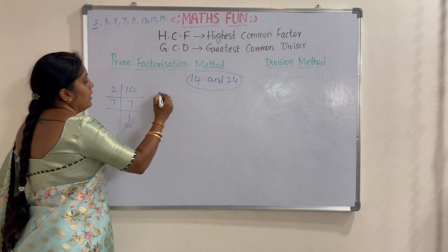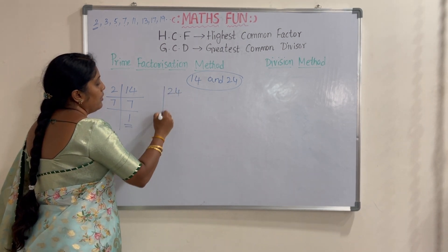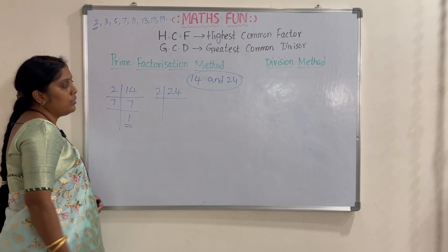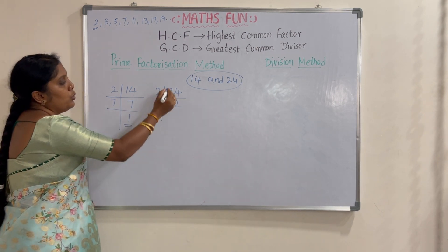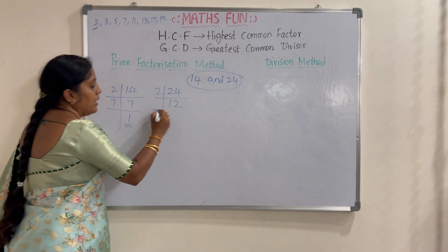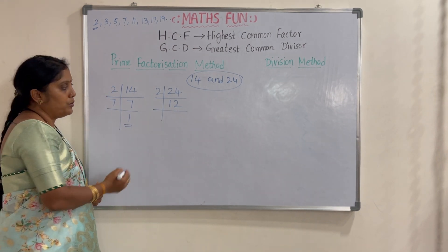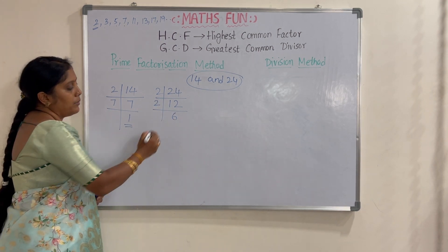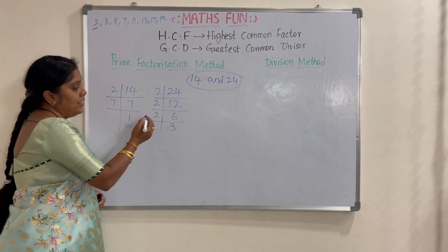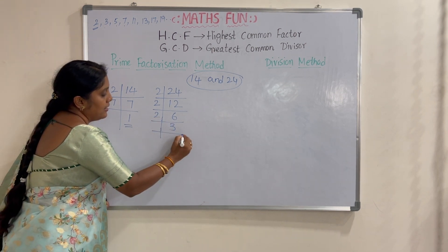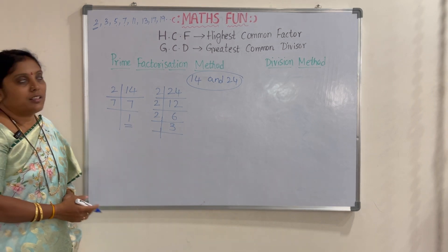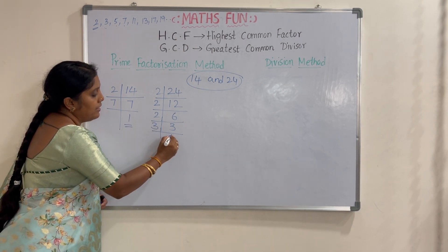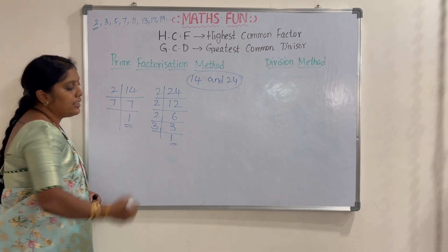In the same way, let us do the prime factorization for 24. The first prime number is 2. 2 divides 24 and the quotient is 12, since 2 twelves are 24. Again 12 is divided by 2 — 2 sixes are 12. Again 2 divides 6 — 2 threes are 6. Now 2 does not divide 3, so we go to the next prime number 3. 3 divides 3 — 3 ones are 3. Now the quotient is 1.